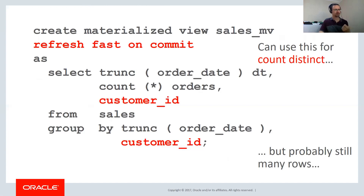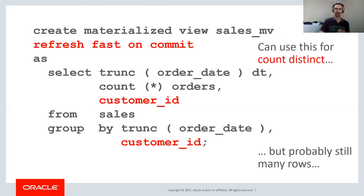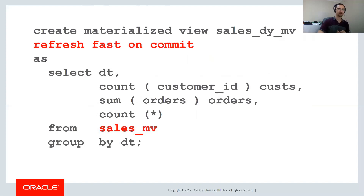You might wonder: do we need two materialized views now — one counting by day, and this one counting by customer by day? You can have two completely separate materialized views. What you can also do is chain materialized views on top of each other. If we've got our sales MV counting orders per date and customer ID, we add a primary key to that, add a materialized view log on the materialized view itself — not just on base tables — then create a second fast refresh on commit materialized view on top of that to count orders per day.